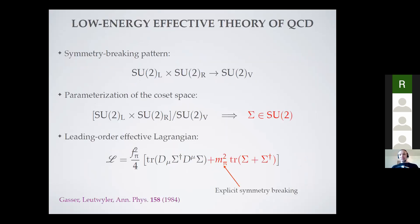I'm going to use the low-energy effective field theory of QCD, which is chiral perturbation theory. Here's a brief reminder: I'll constrain myself to two quark flavors for the whole talk. We have the usual chiral symmetry that's spontaneously broken in the ground state to its vector subgroup, and this implies that the effective theory is formulated in terms of an SU(2)-valued effective field Σ, which carries the three pions.